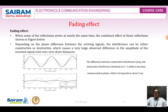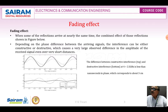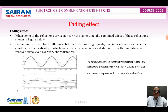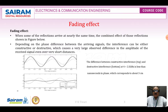Of the received signal, even over very short distances. In the diagram, you can see the difference between constructive interference (top) and destructive interference (bottom) at 2.5 GHz — less than a nanosecond in phase, which corresponds to just above three centimeters. Moving the transmitter or receiver even a very short distance can have a dramatic effect on the received amplitude.